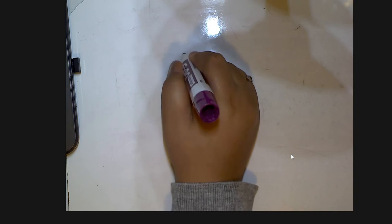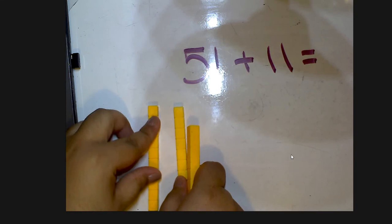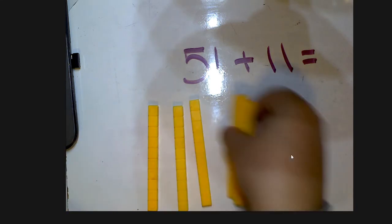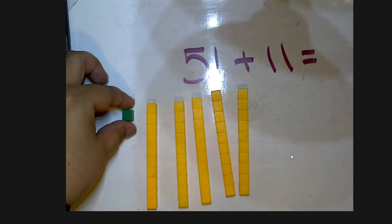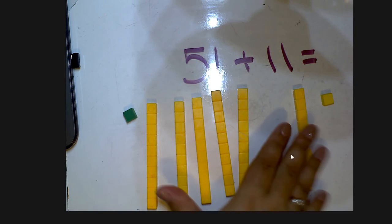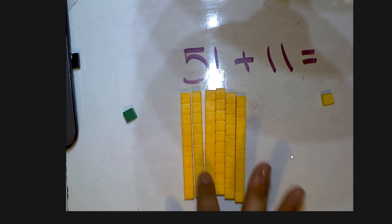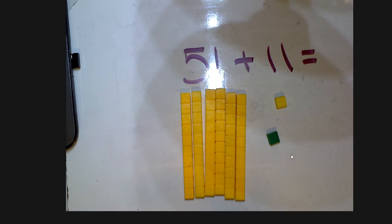Now, things like 51 plus 11 we know how to do, right? We can model it — we have 51, and then on the other side we have 11, and we just add it together by adding our tens together. So this is 10, 20, 30, 40, 50, 60, 61, 62, and we find that answer really easily.